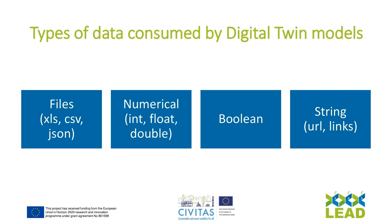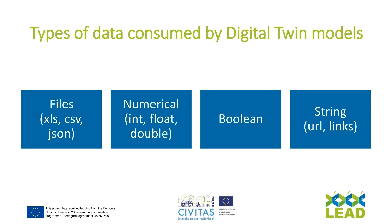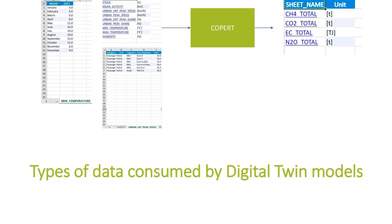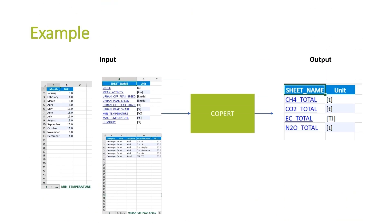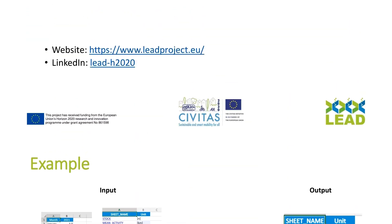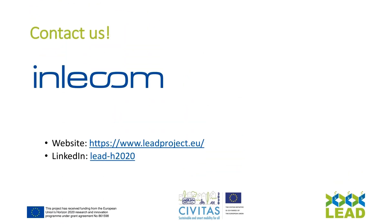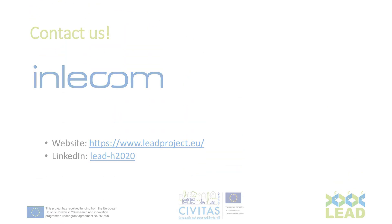Input data can be files, numerical data, boolean, and string data. Here is an example of a model that uses weather information and fleet specifications as input, and provides emissions values — including carbon dioxide — as output. Learn more about the platform in unit 5.